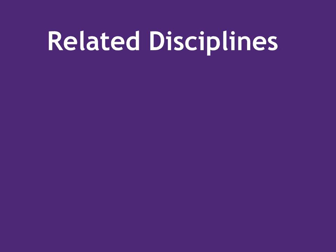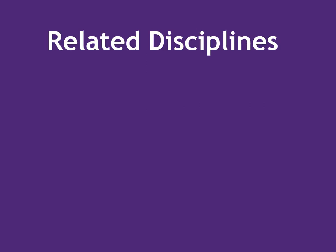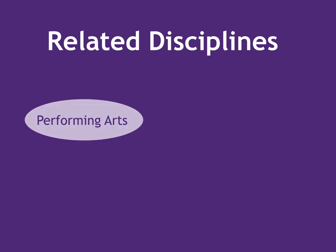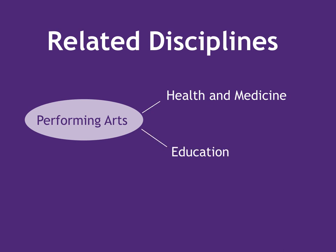It's also a good idea to think about which disciplines might have written something about your topic. People from several fields might be interested in dance therapy for patients with dementia, and they will all have unique points of view that can be helpful to my research. For example, I might want to research health and medicine and education databases in addition to the performing arts databases to research this topic.